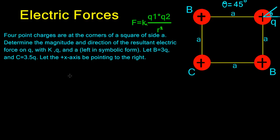Hi. Today we are talking about electric forces. In this problem, four point charges are at the corners of a square of side A. Determine the magnitude and direction of the resultant electric force on Q, with K, Q, and A left in symbolic form. Let B equal 3Q and C equal 3.5Q.